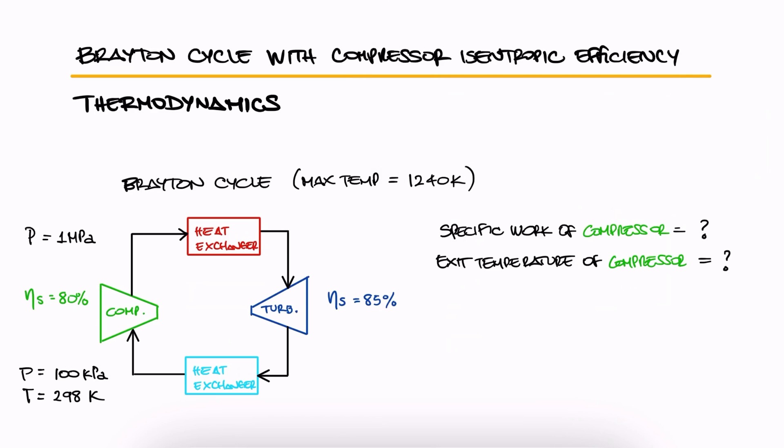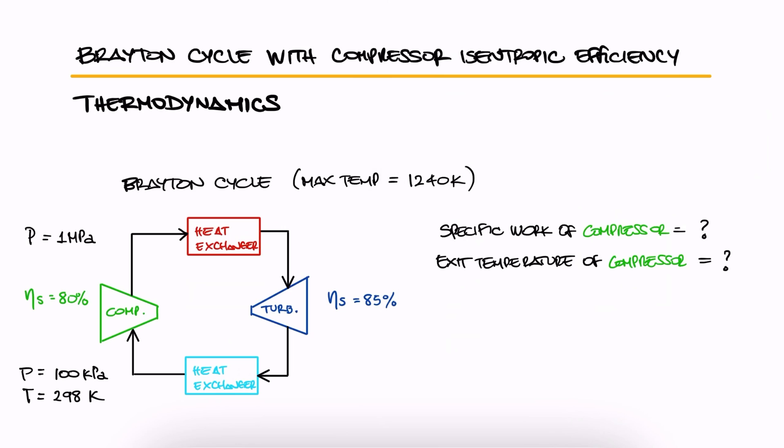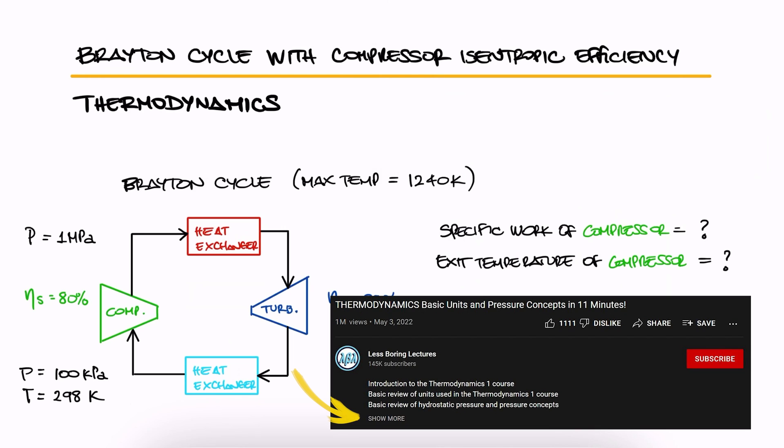As usual, pause here and try solving this problem yourself before watching the solution. This is the first example for the Brayton cycle main lecture, and it uses concepts from the isentropic efficiency main lecture too, so make sure you've studied those two lectures before attempting to solve this problem. The links to those 11 and 8 minute lectures respectively and all of the other lectures of the thermo course are found in the description below.